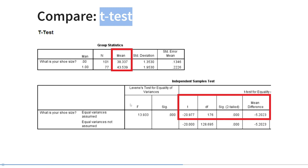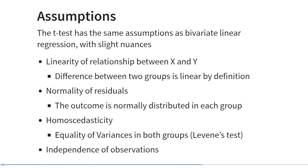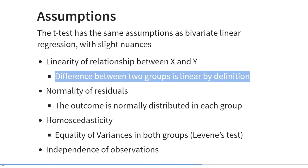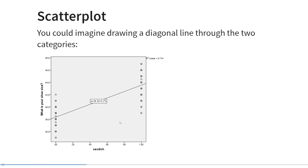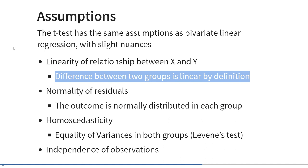Levene's test effectively tests the assumption of homoscedasticity when we have a binary predictor. The independent samples t-test is just linear regression, so it has the same assumptions as bivariate linear regression, with slight nuances because we assume a binary predictor. The assumption of linearity still applies, but because our predictor only has two values, the difference between those two groups is linear by definition — the shortest distance between two points is a straight line. In practice, we can ignore the assumption of linearity when using a binary predictor.